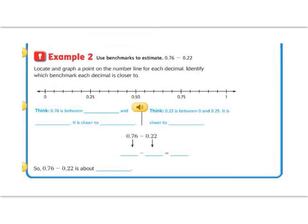Example 2 has us using benchmarks again, but this time we are going to subtract. So let's identify the numbers that they gave us on the number line. 0.76 is like 0.75, just a tiny bit bigger. So on the number line it would be about right here. It is between 0.75 and, here is one benchmark, here is our next one. So the next one would be one, but it is closer to 0.75. So that is what I am going to round it to, 0.75.